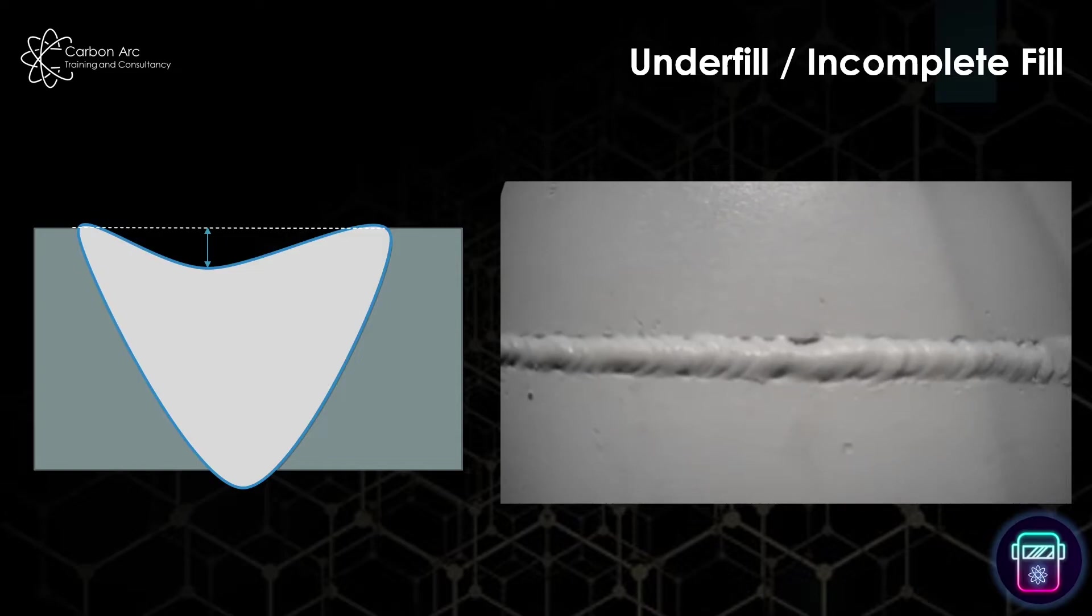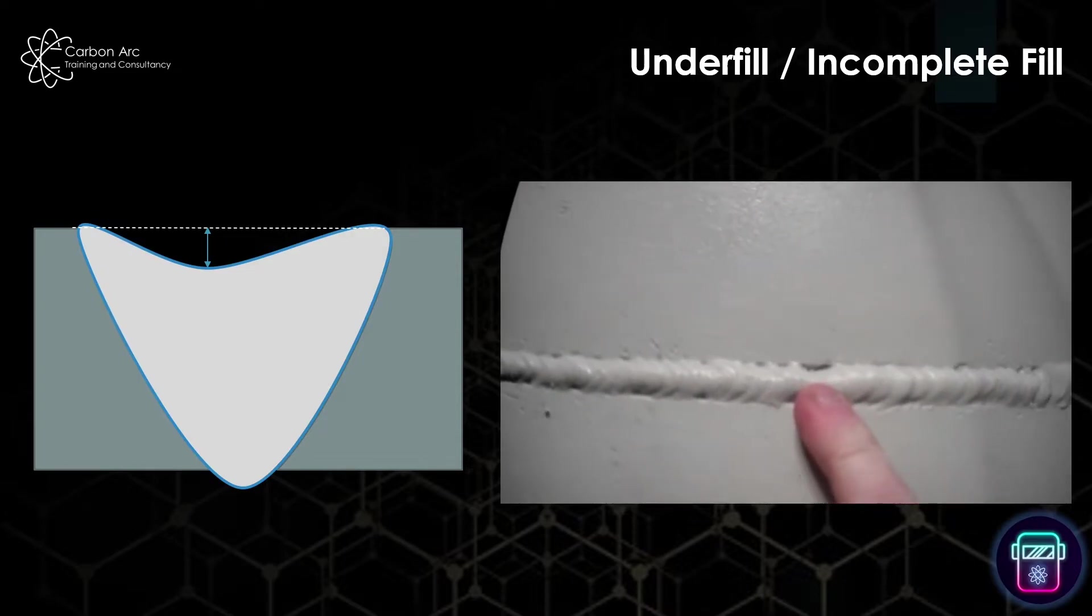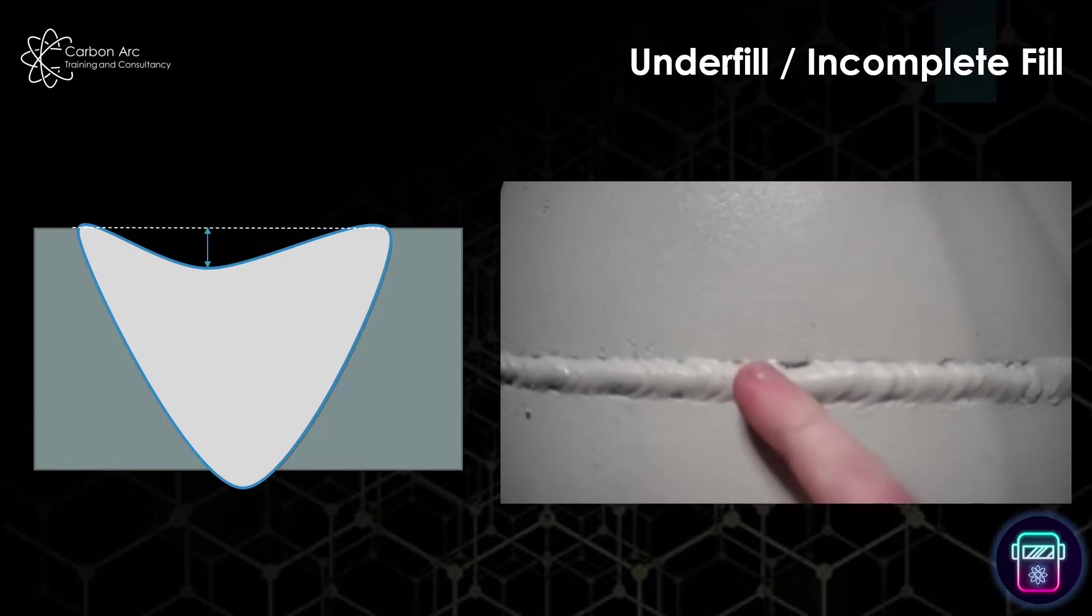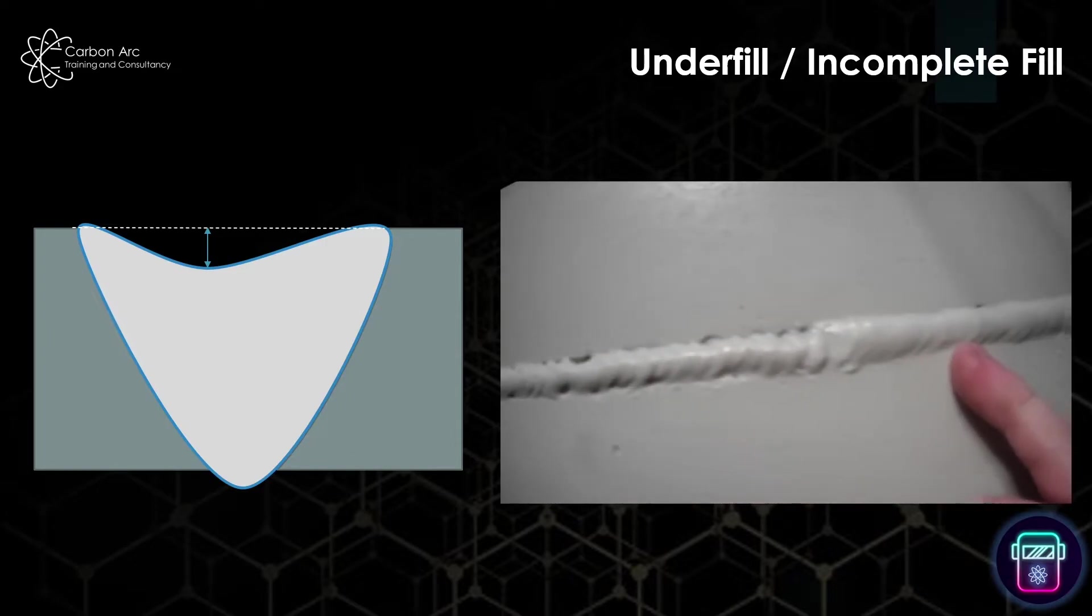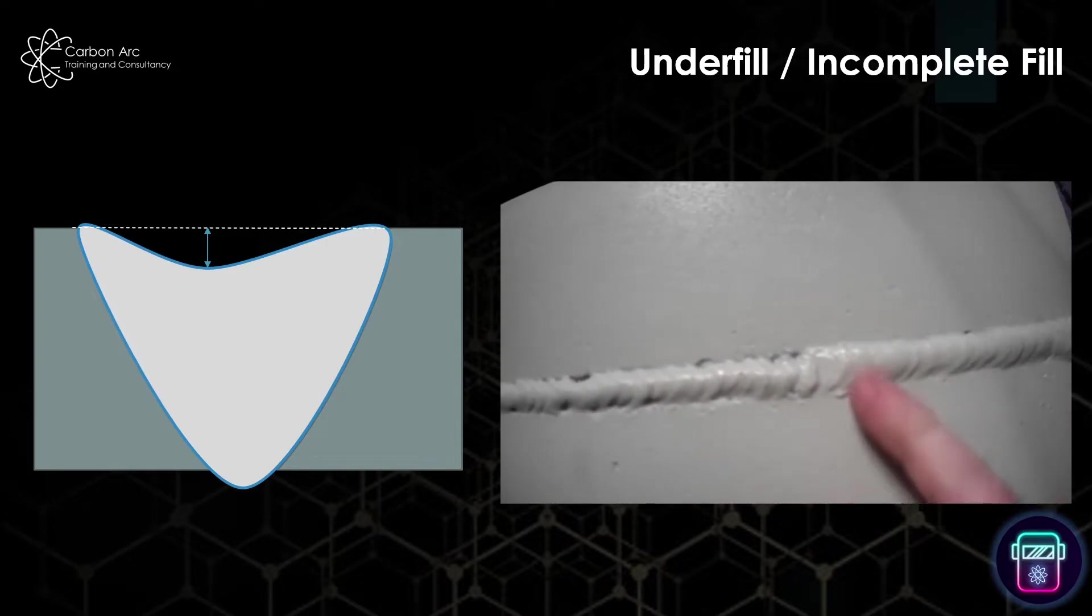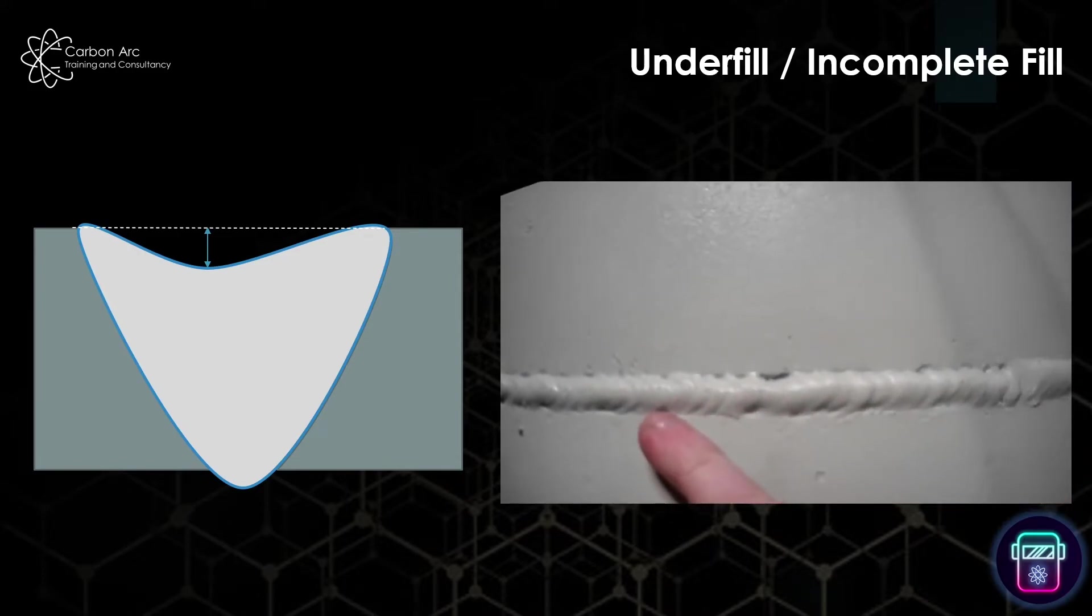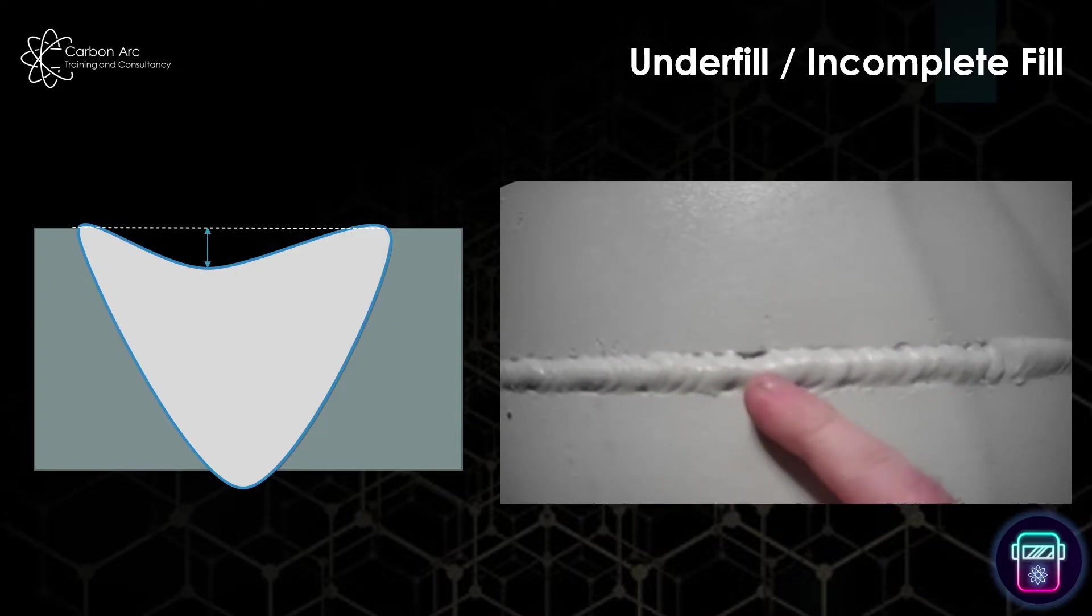The first defect we're going to talk about here is underfill. As you can see in this area, we've got weld metal that hasn't completely covered the width of the weld. You can see it definitely pulls in at this point and becomes narrower. If we have a look further along the weld, this is a correct weld width for this joint, but we can see in a couple of places the weld's pulling in narrow and is underfilling the joint.